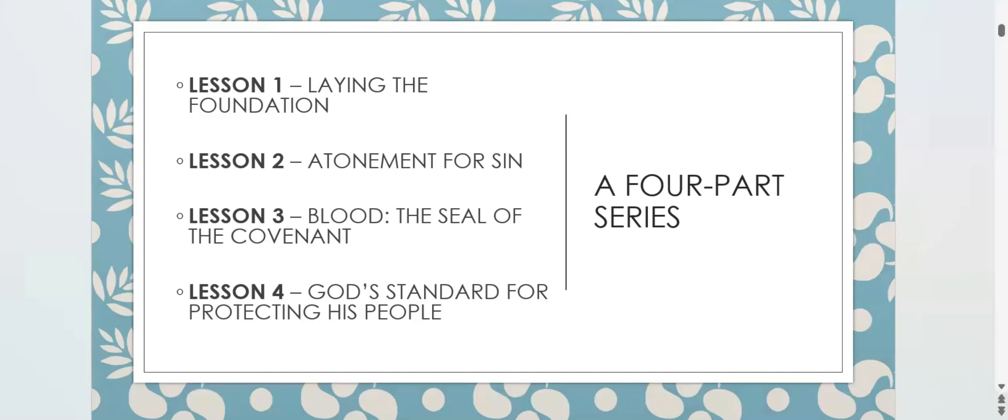In lesson two we looked at atonement for sin, covering Exodus chapter 12 and the Passover, which is a type pointing to Christ as our Passover. In lesson three, the topic was 'Blood: The Seal of the Covenant.' We looked at three covenants — the Abrahamic covenant, the Mosaic or old covenant, and the new covenant.